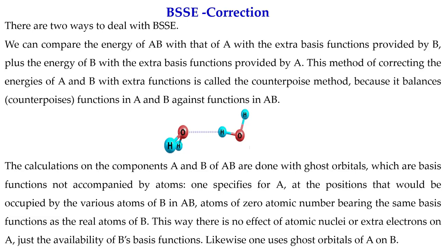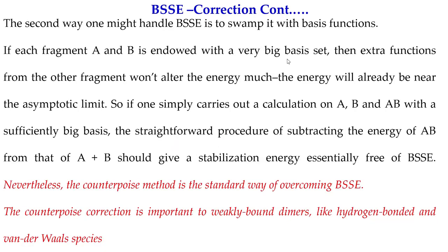Specifically, one places ghost atoms at the positions occupied by the atoms of B in the AB dimer — atoms of zero atomic number bearing the same basis functions as the real atoms of B — so there is no effect of atomic nuclei or core electrons on A, just the available basis functions of B. Likewise, ghost orbitals of A are placed on B. In this way we can remove the basis set superposition error arising from the superposition of the two molecules' basis sets.